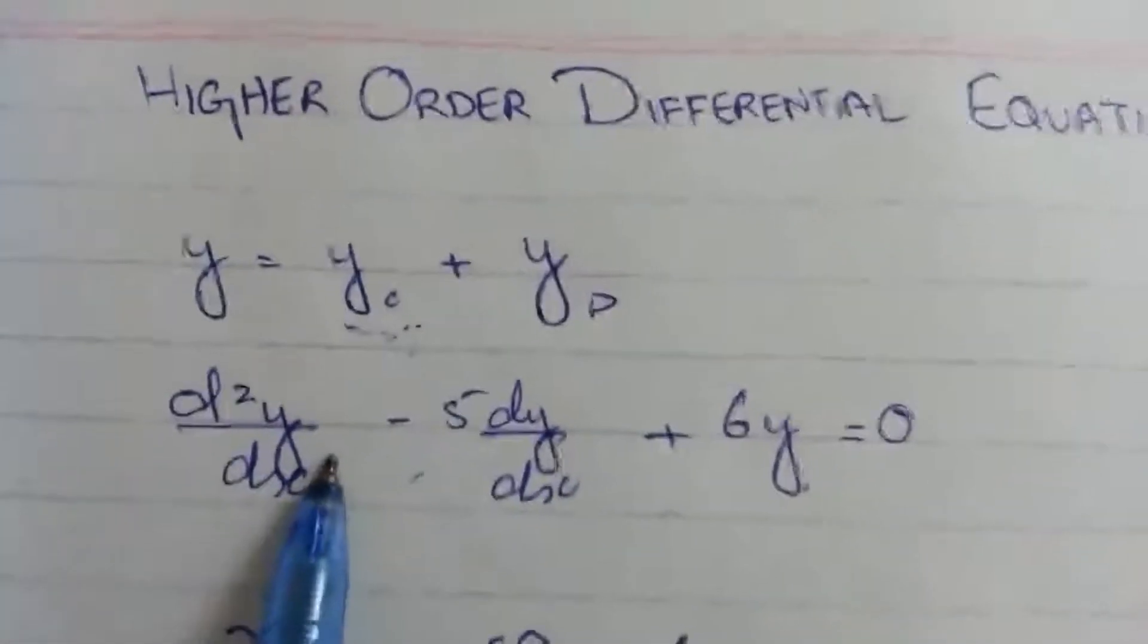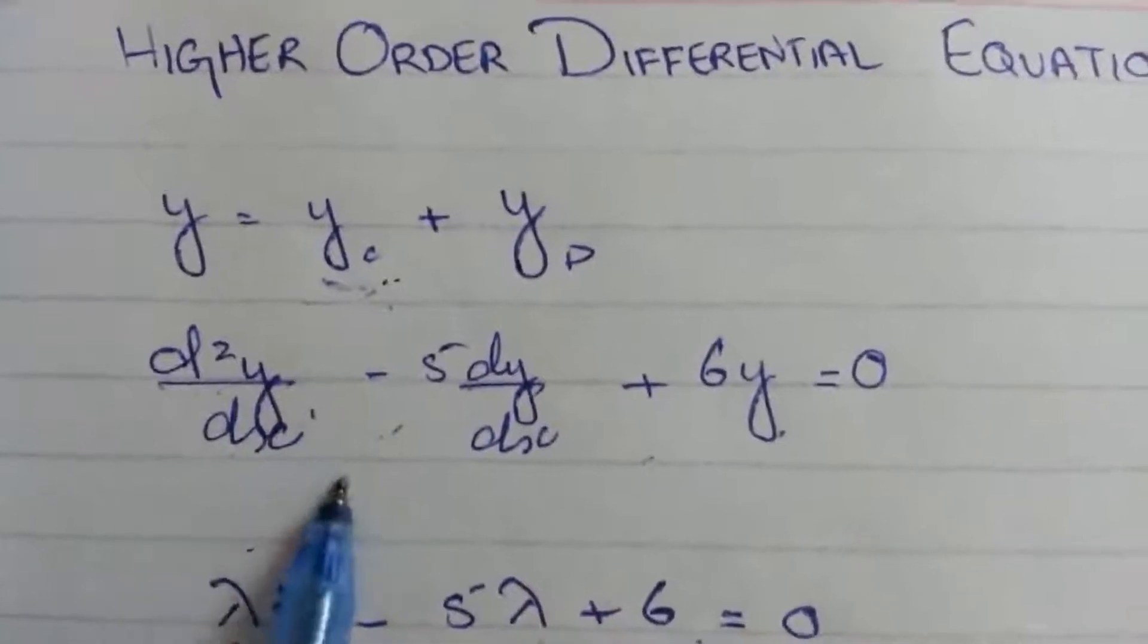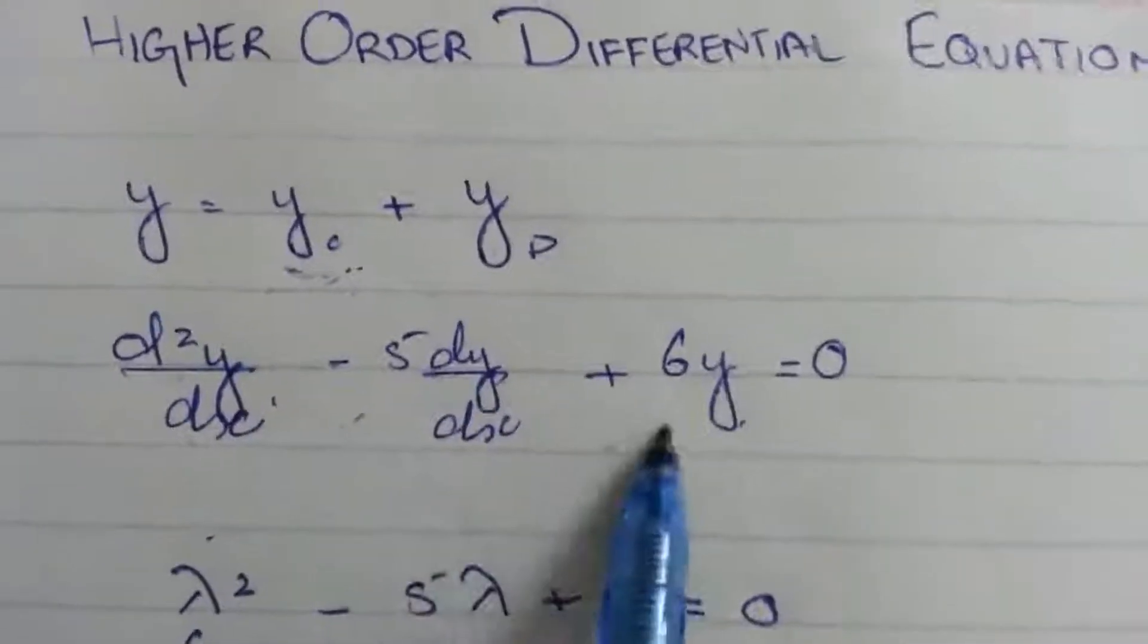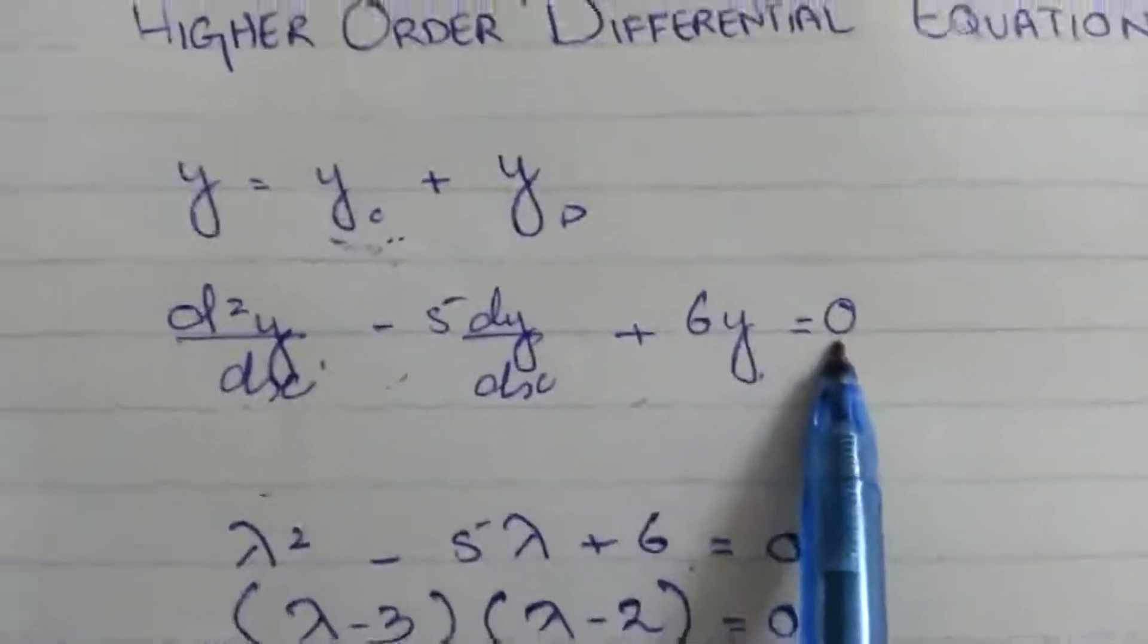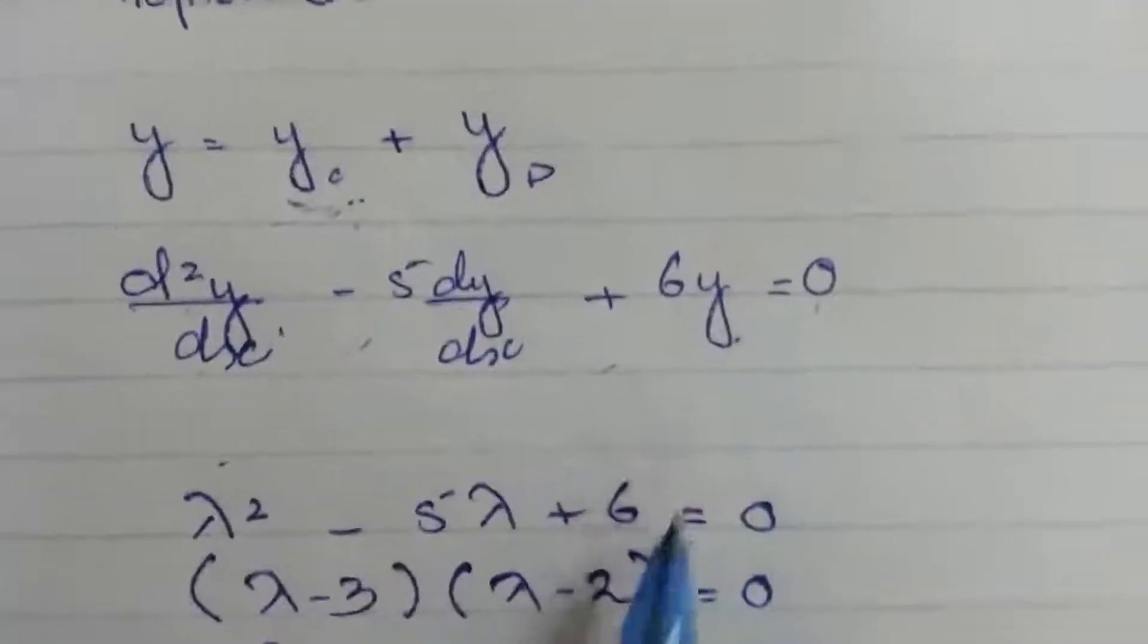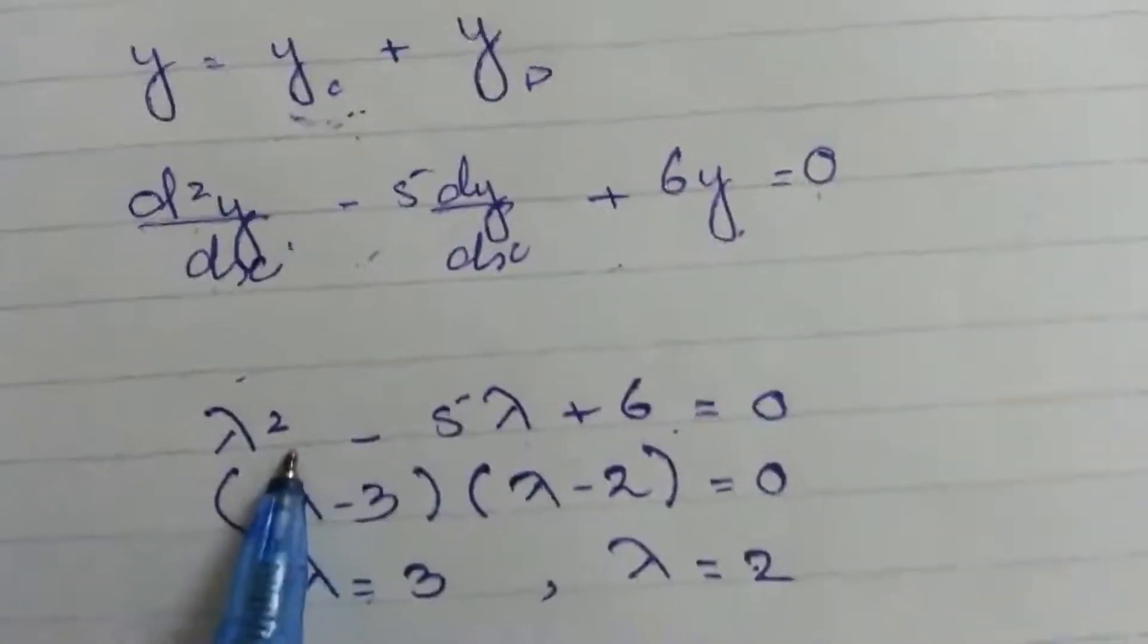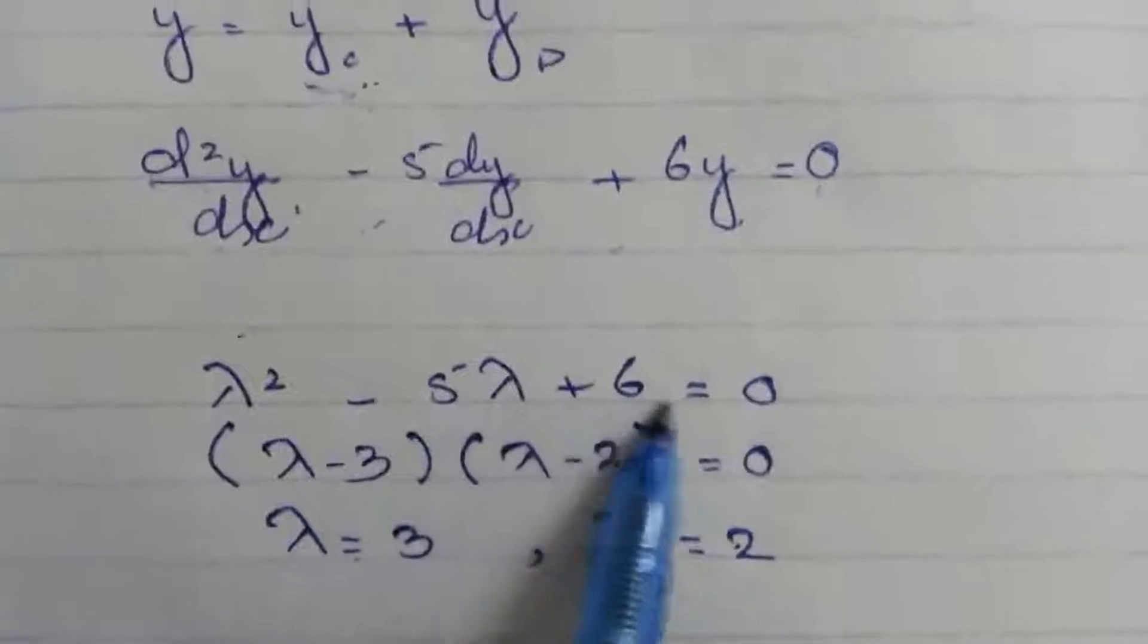Let's consider an example. d²y/dx² minus 5dy/dx plus 6y equals 0. First we will convert this equation into auxiliary form, or characteristic form: λ² minus 5λ plus 6.